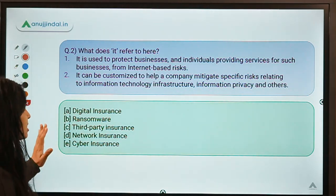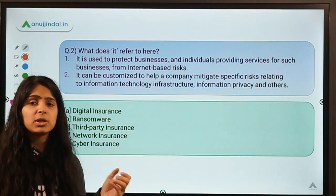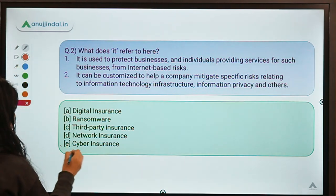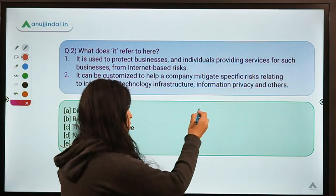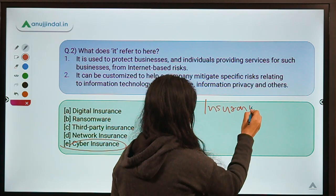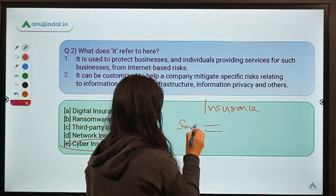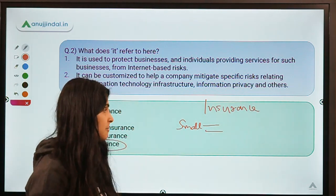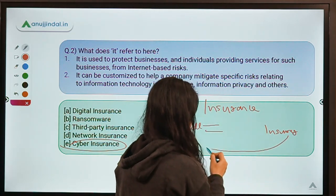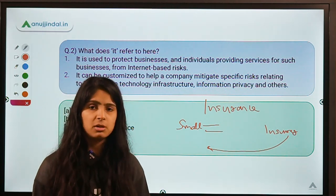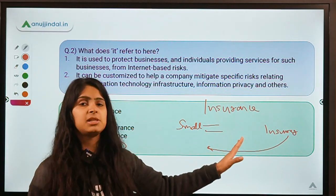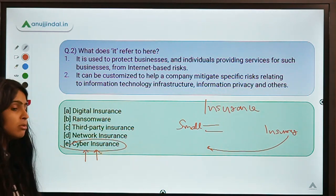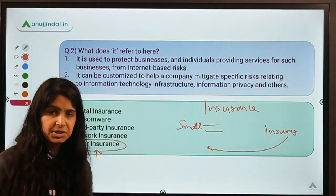Moving to question number two: two statements are given and you have to identify the term they refer to. The correct answer is cyber insurance. We all know what insurance is — you make small payments at regular intervals, and whenever something bad happens, the insurer pays you back as mentioned in the terms and conditions. Cyber insurance protects you against risks on the internet, such as loss of important material or confidential data.